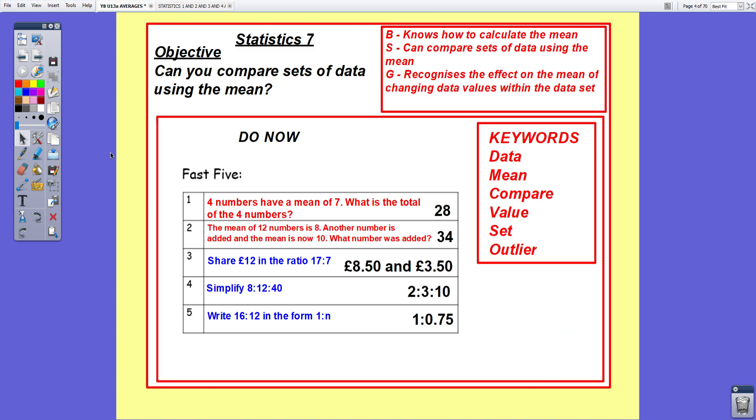Question one, four numbers have a mean of seven. What's the total of the four numbers? The mean, as you should know by now, is when you add all the numbers together and divide by how many there are. What number divided by four equals seven? The answer is 28.